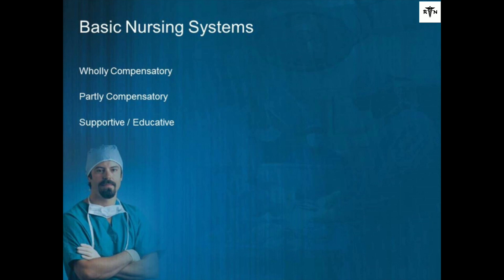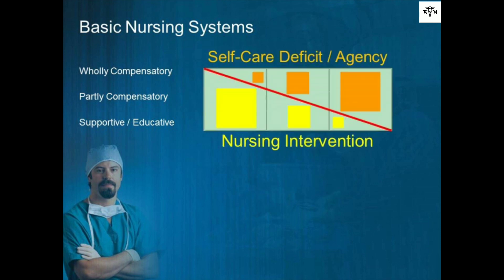The patient's ability for involvement in their own care will determine which system would best meet their needs. The graphic to the right depicts the relationship between patient self-care deficit and agency, or ability for involvement, related to nursing intervention. There is an inverse relationship between self-care deficit in orange and nursing intervention in yellow.